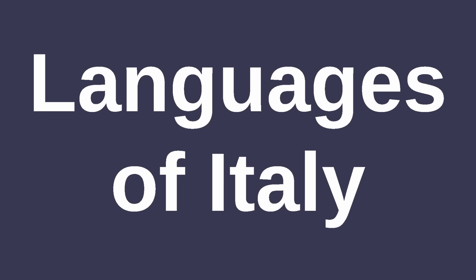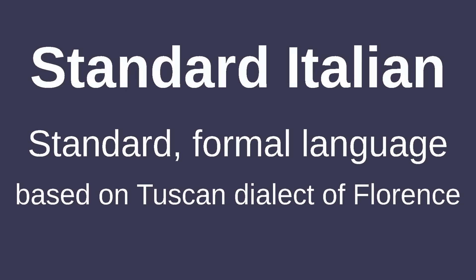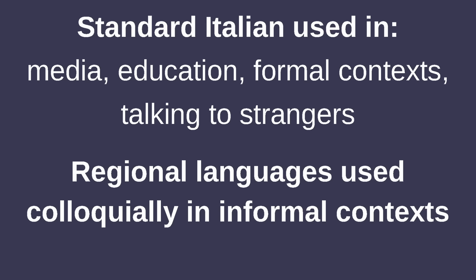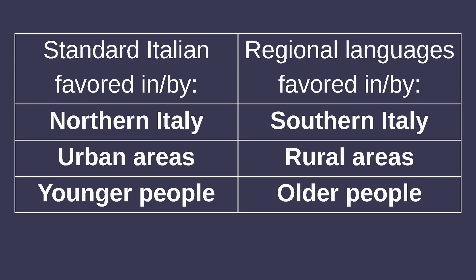Next, I'll be talking about the languages of Italy, including Italian. All across Italy, there are many regional Romance languages spoken alongside Standard Italian, which was based on the Florence dialect of the Tuscan language. Standard Italian is the sole language of media and education and is used in formal contexts, while the regional languages are used colloquially in more informal situations. This can be considered diglossia, where speakers know different forms of the same language and use them differently based on context. The regional languages are spoken more often in the south, rural areas, and by elderly people, and are unfortunately all on the decline everywhere in Italy.